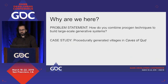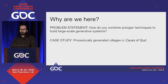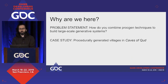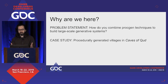We have this problem statement: how do you combine ProcGen techniques to build large-scale generative systems? We're going to walk you through a case study of how we procedurally generated a whole village in Caves of Qud. Where we can, we'll try to generalize it into some wisdom, but for the most part we're just going to be walking you through the system so you can see how you might apply it to your own generative systems.